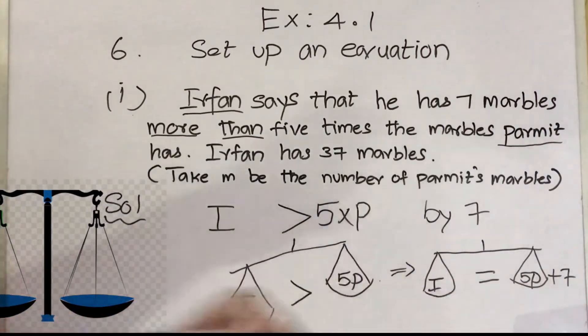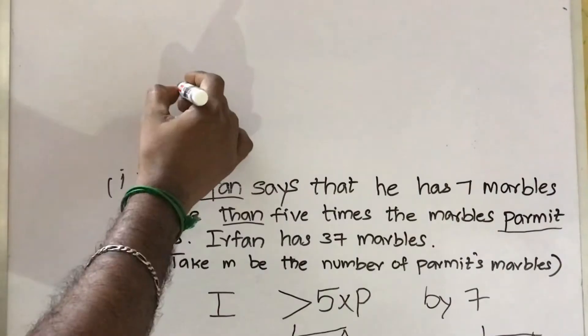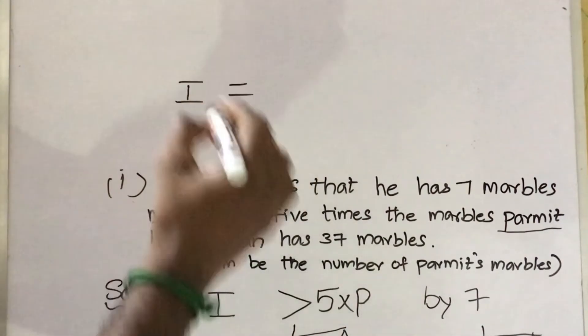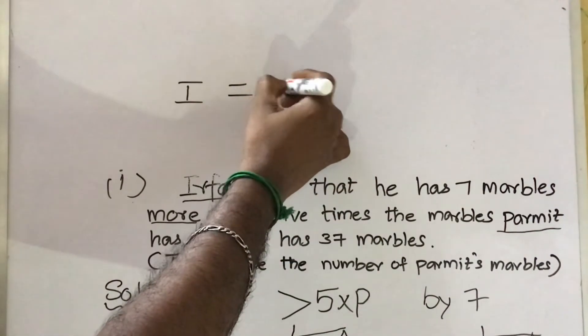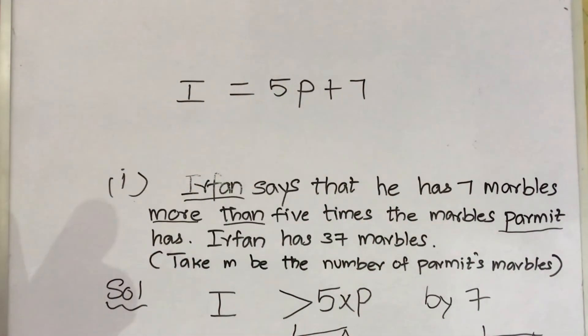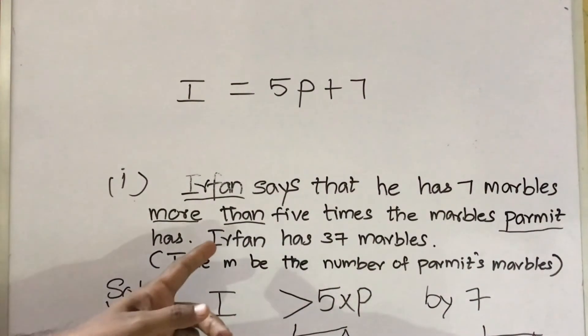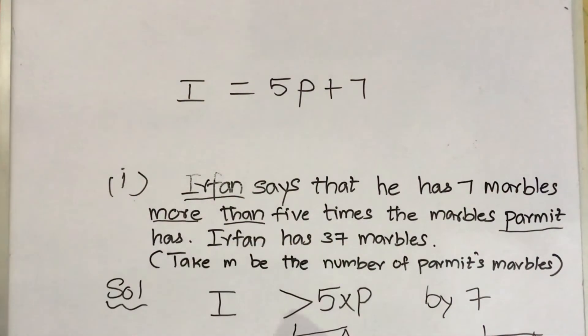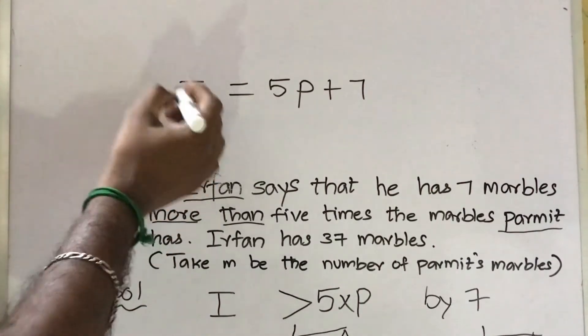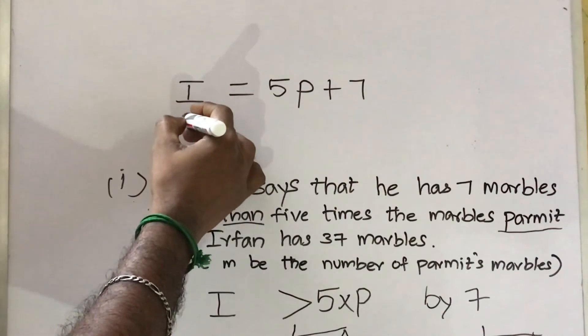Now write the equation: write I first, then the equal to sign, and 5P + 7. So this is our answer. And one more given is there: Irfan has 37 marbles. So I is for Irfan, so substitute 37 in the place of I: 37 = 5P + 7.